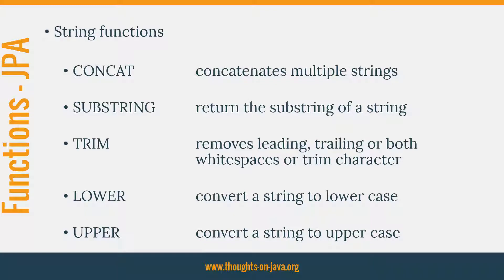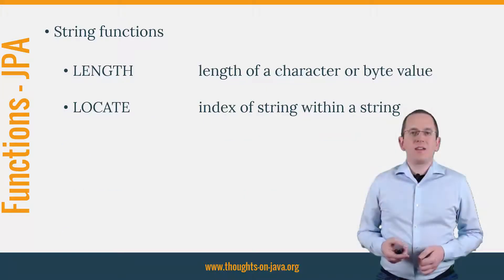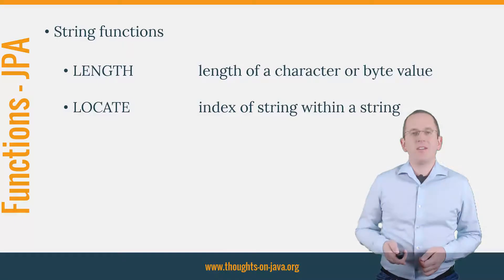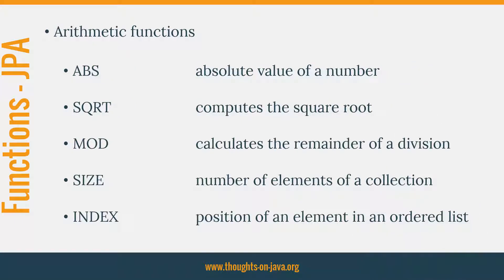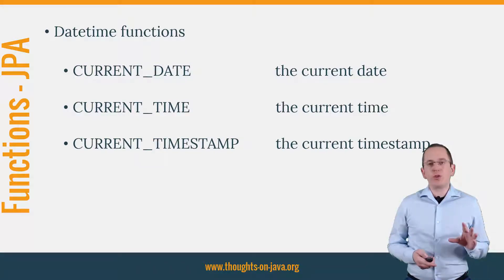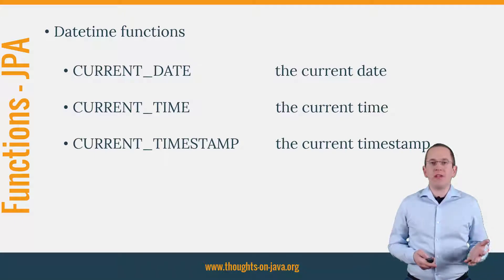JPA also supports a set of functions to do basic string manipulation. You can also determine the length of a string or get the index of a substring within the selected string. These arithmetic functions allow you to implement some more complex calculations. And JPA also supports a set of very useful date time functions, which you can use to get the current date, time, or timestamp from the database.